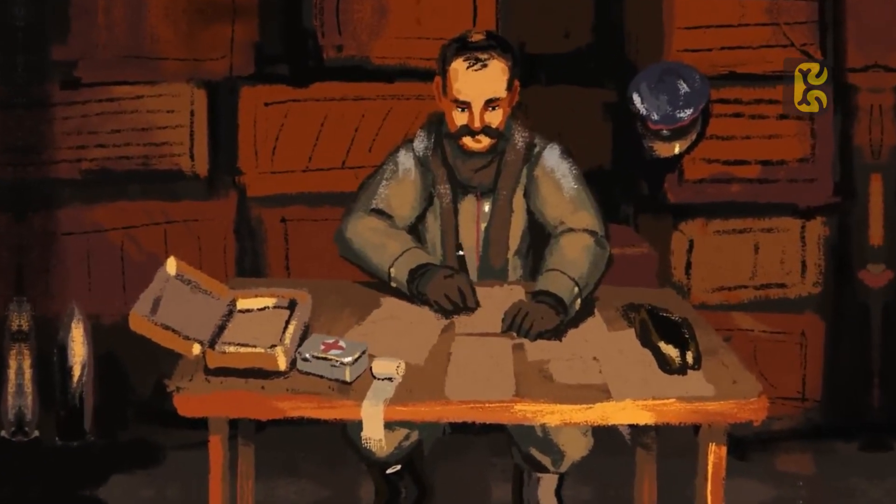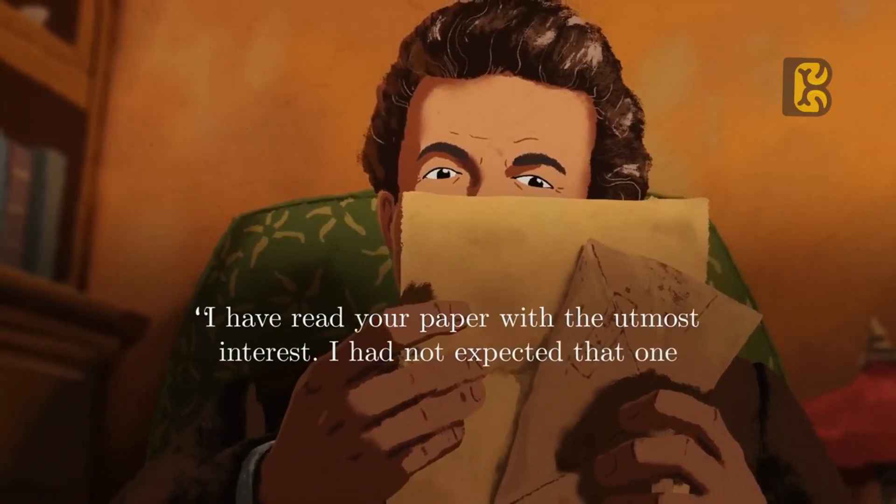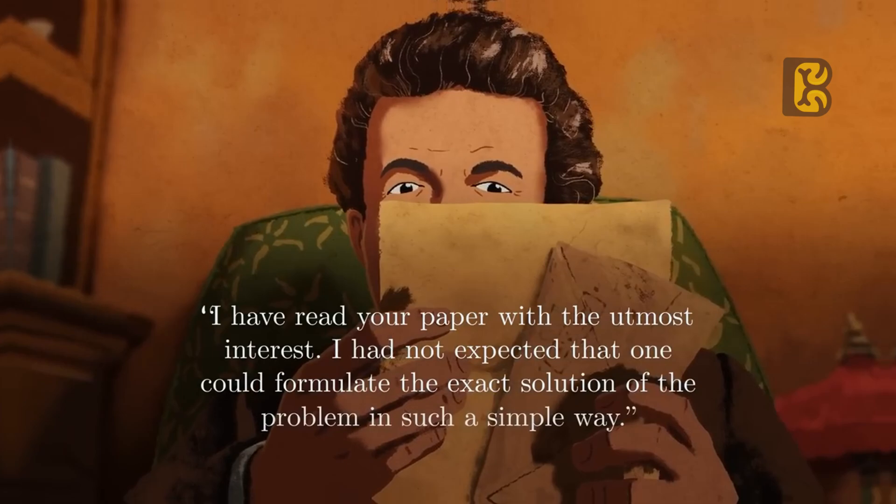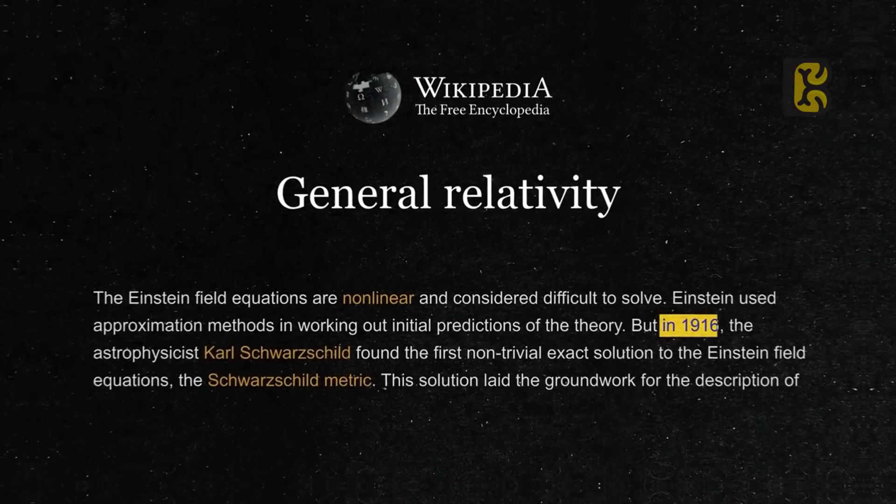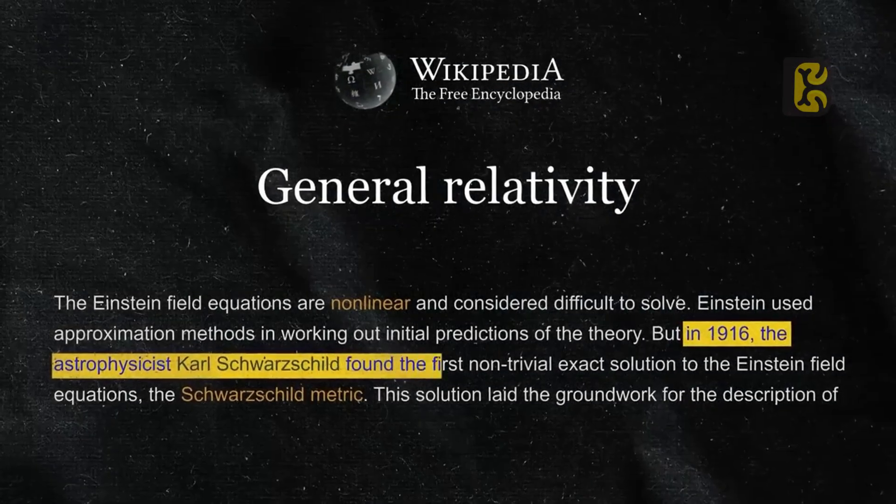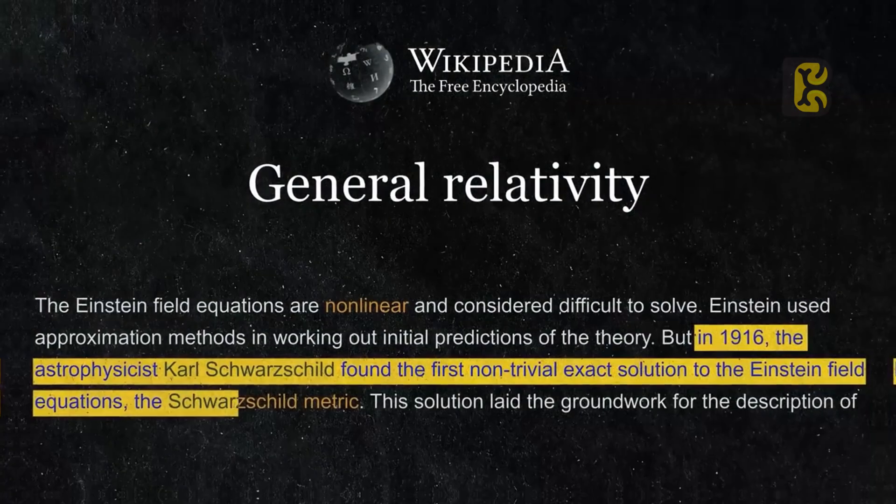When Schwarzschild sent this solution to Einstein, Einstein replied that he hadn't thought anyone could formulate such an exact and simple solution to the problem. However, Einstein did not realize that the equation he considered a solution would, in fact, lead to a singularity by breaking the very laws of physics. In 1916, Schwarzschild's equation was published as a solution to the general theory of relativity under the name Schwarzschild metric.